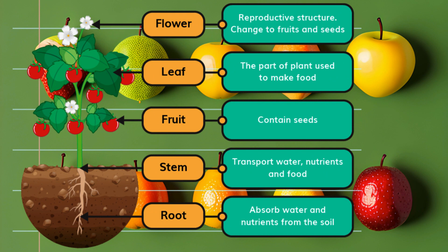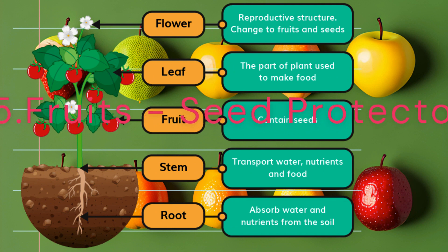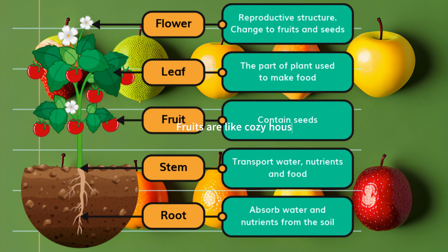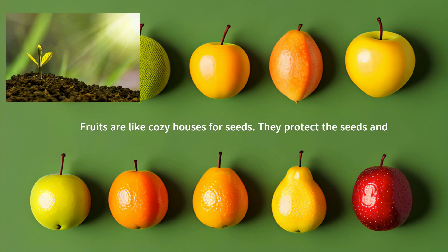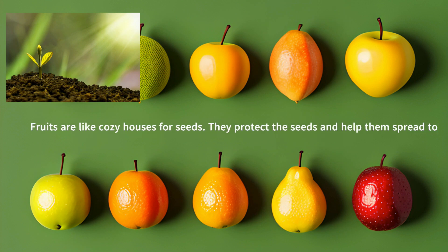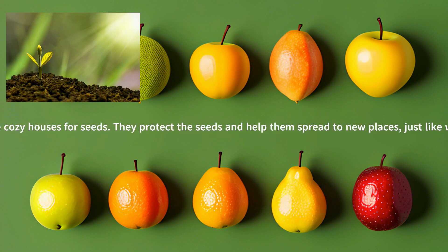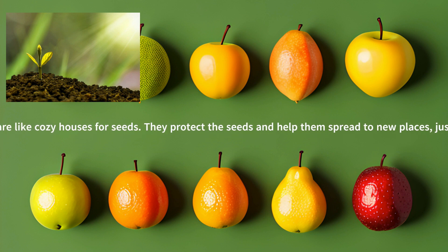Fruits: seed protectors. Last but not least, we have fruits. Fruits are like cozy houses for seeds. They protect the seeds and help them spread to new places, just like when you blow on a dandelion.